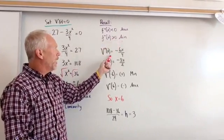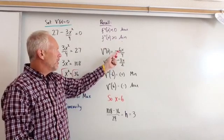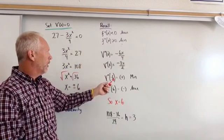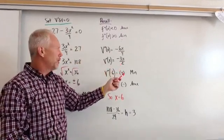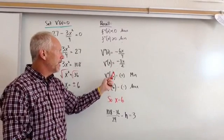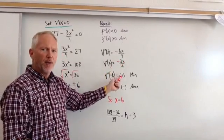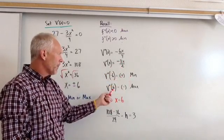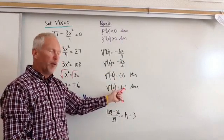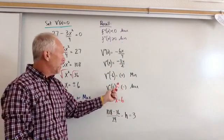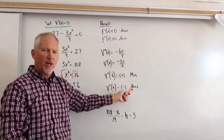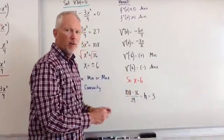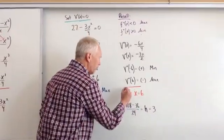So we find f double, or V double prime of x, which is negative 6x to the 4th. We just take the 2, bring it down, that's 6 and over 4, which reduces to negative 3x over 2. And now if I plug in negative 6, a negative times a negative will be a positive result, which means negative 6 will produce a minimum value. Positive 6 will produce a negative because if I put 6 in here, that's a negative value, and we get a maximum. So x equals 6 is our value for x.